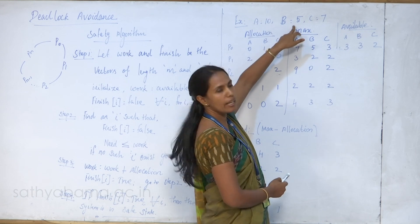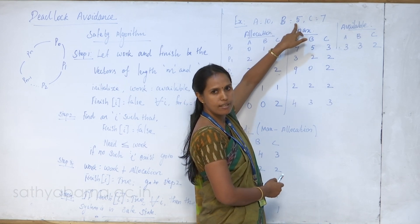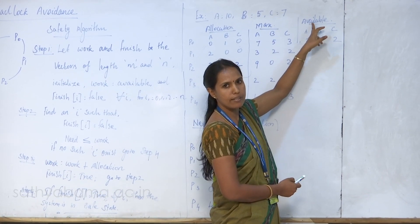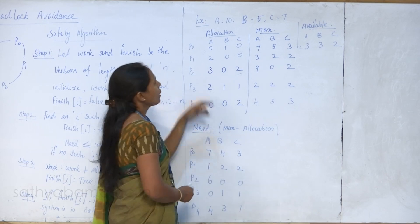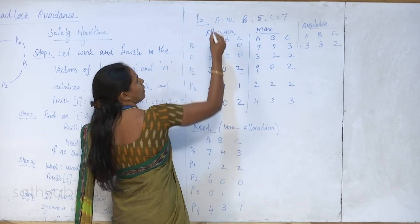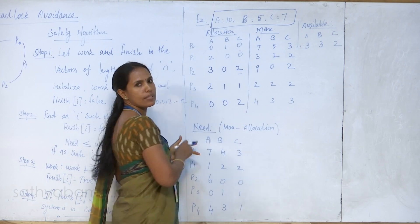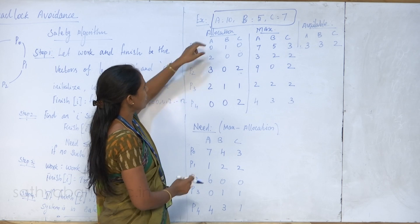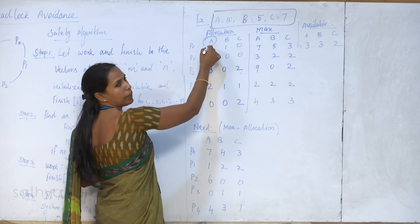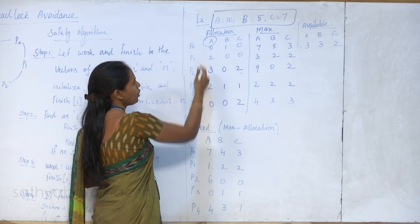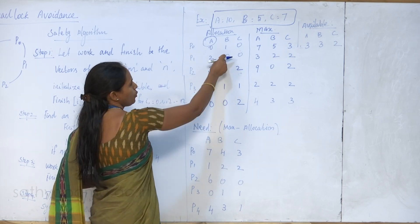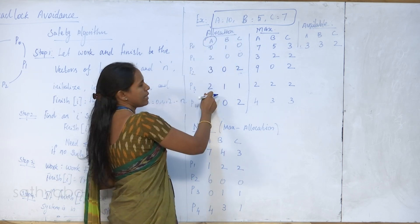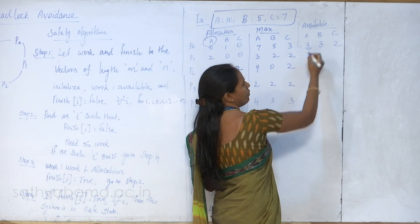From the given total number of available instances, we have to calculate the available matrix. The available matrix is the original given instances minus what is already allocated. For resource type A, across processes P0 to P4: 2 plus 3 is 5, 5 plus 2 is 7. Out of 10, already allocated is 7, so 10 minus 7 equals 3 available.